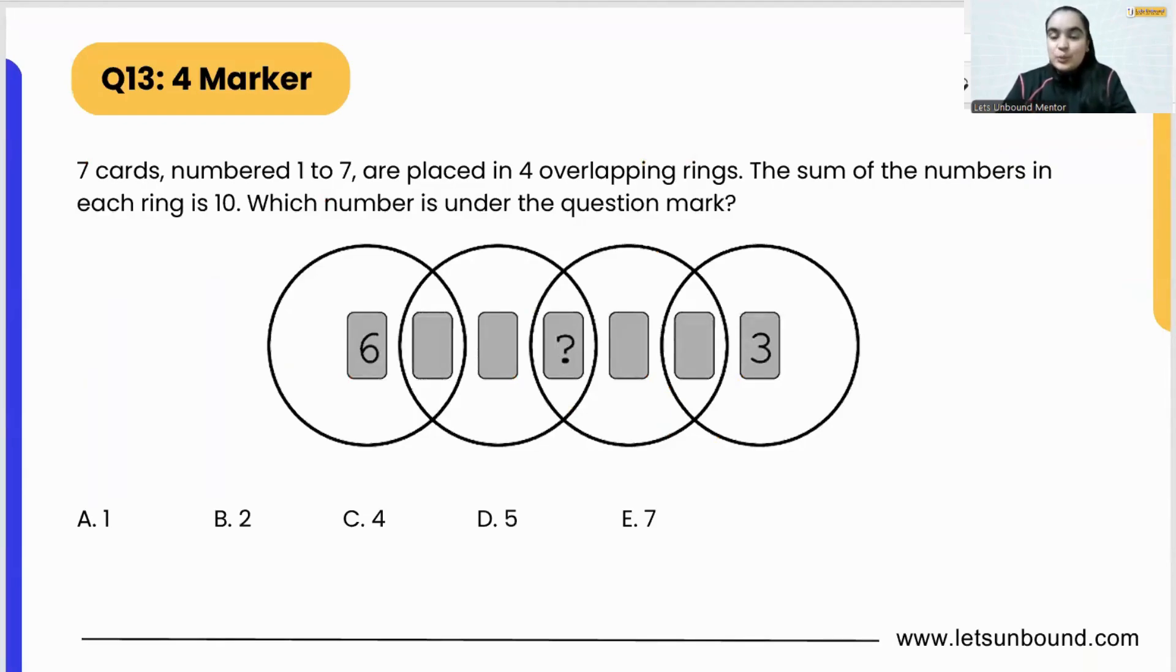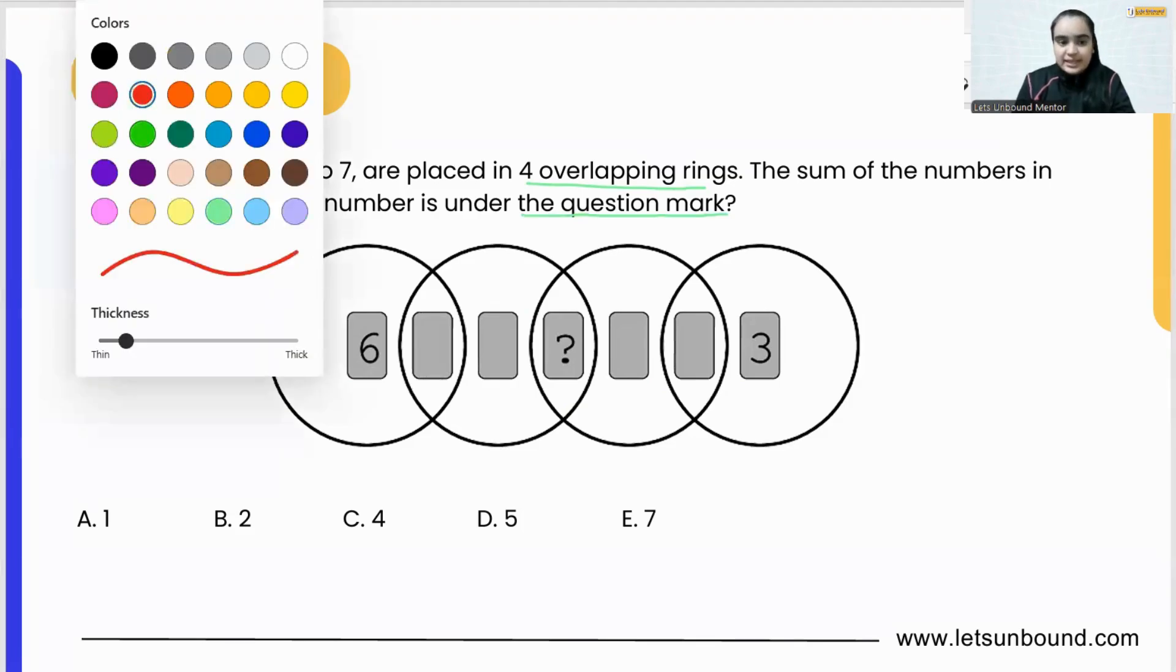Seven cards numbered 1 to 7 are placed in four overlapping rings. You can see over here they have given four overlapping rings. The sum of the numbers in each ring is 10 always. It is going to tell which number is there under the question mark.